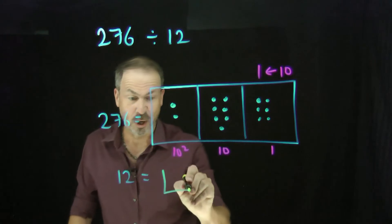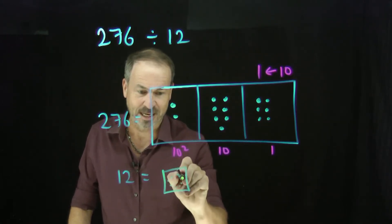And we're looking for groups of 12. Which looks like one, two, three, four, five, six, seven, eight, nine, ten, eleven, twelve.